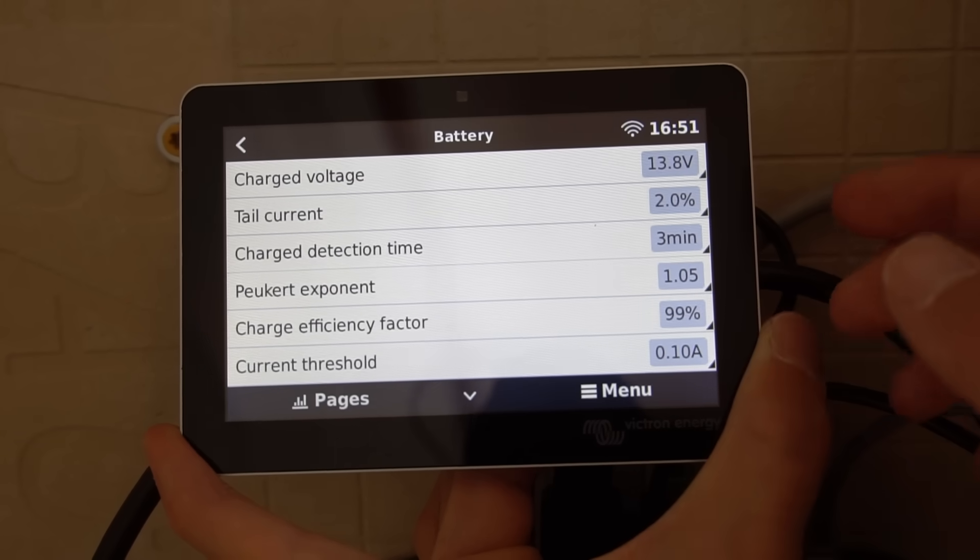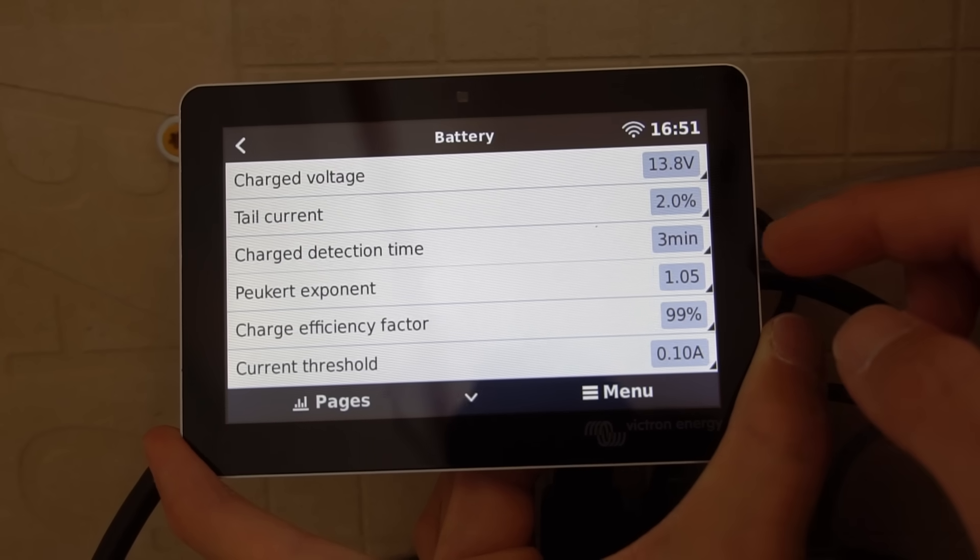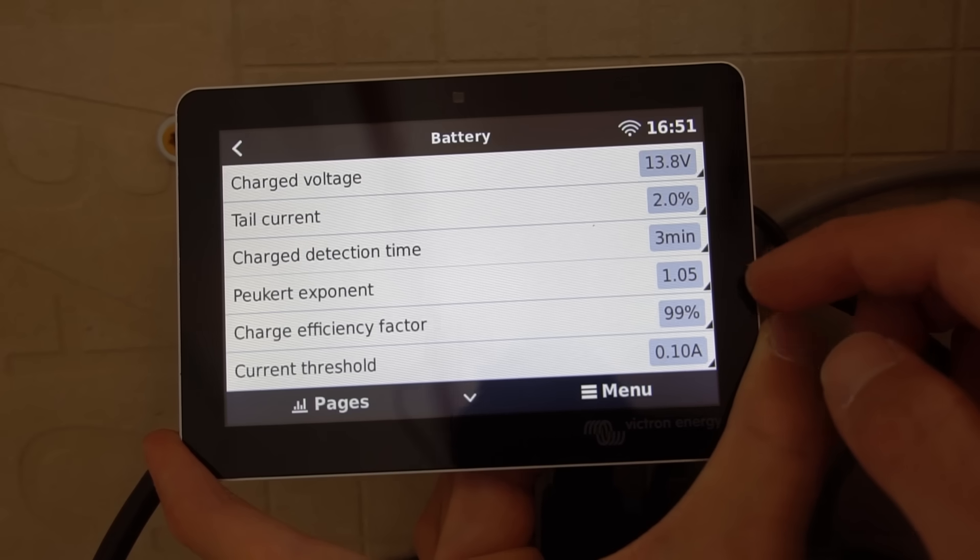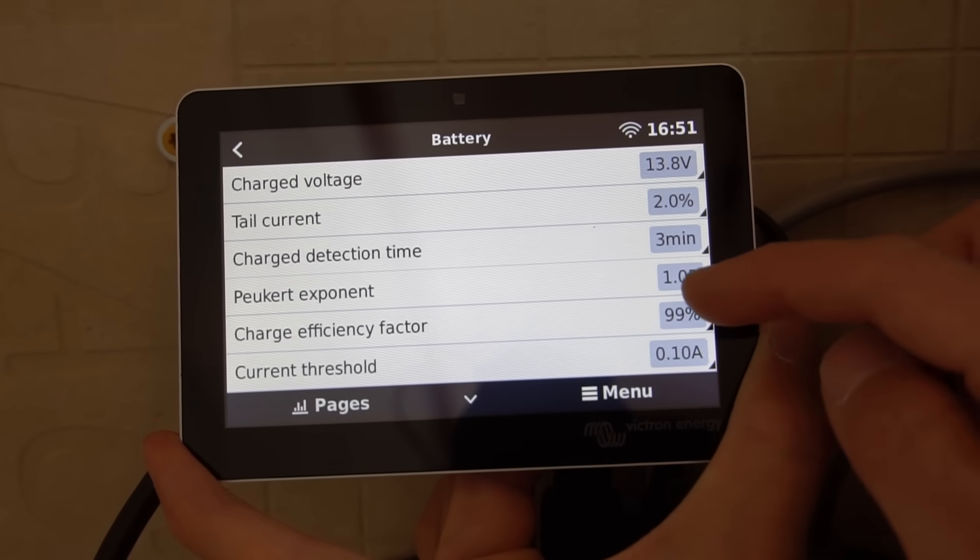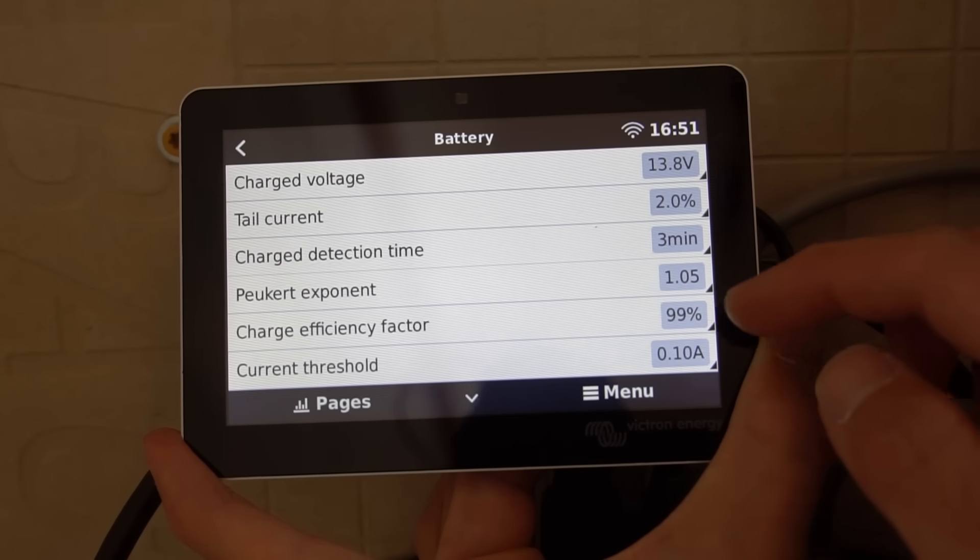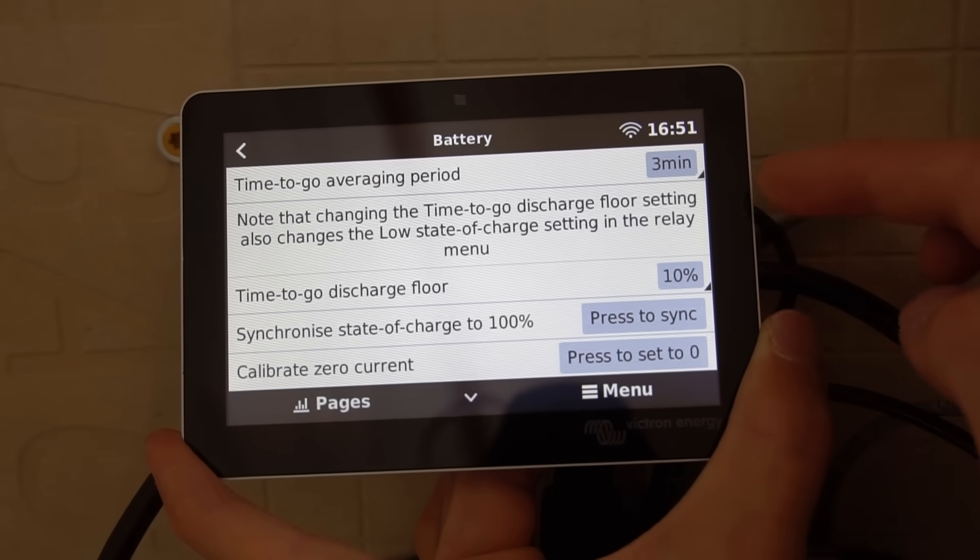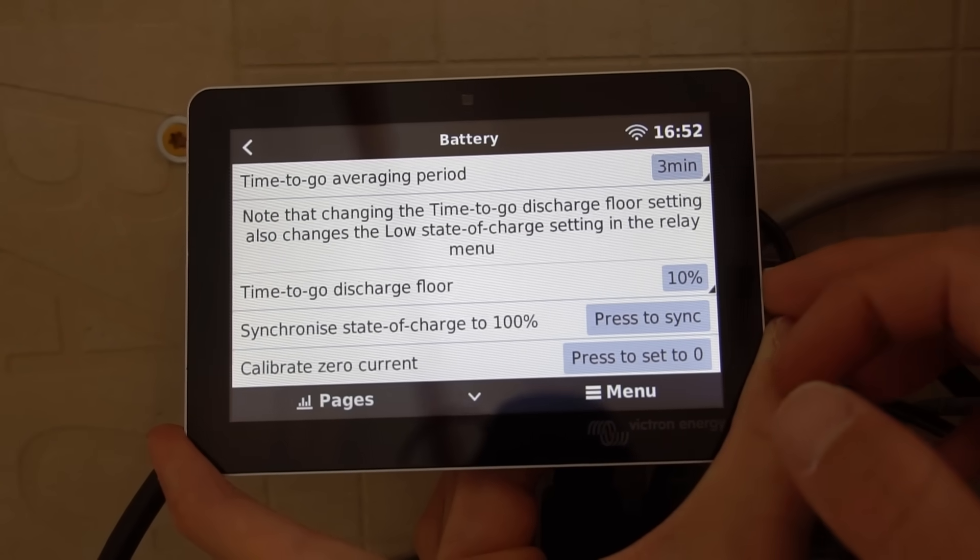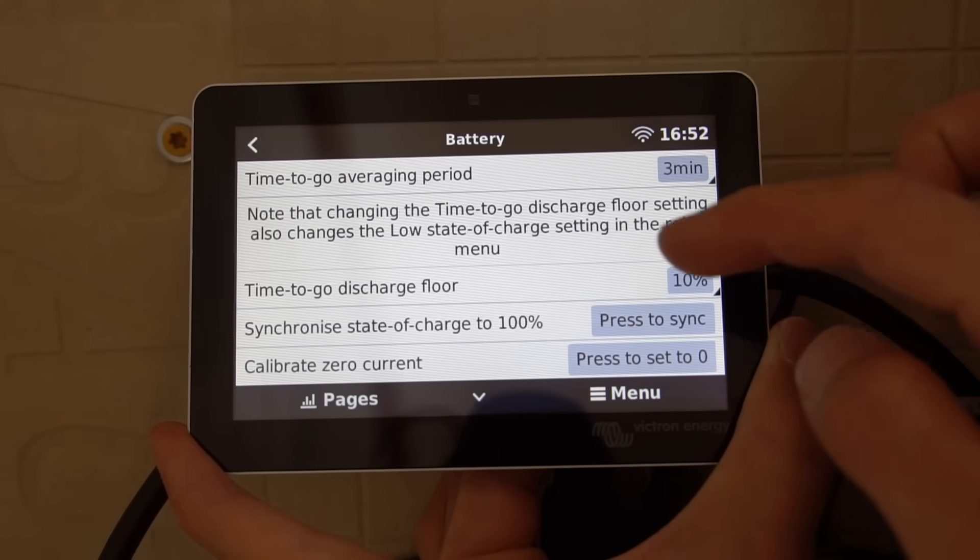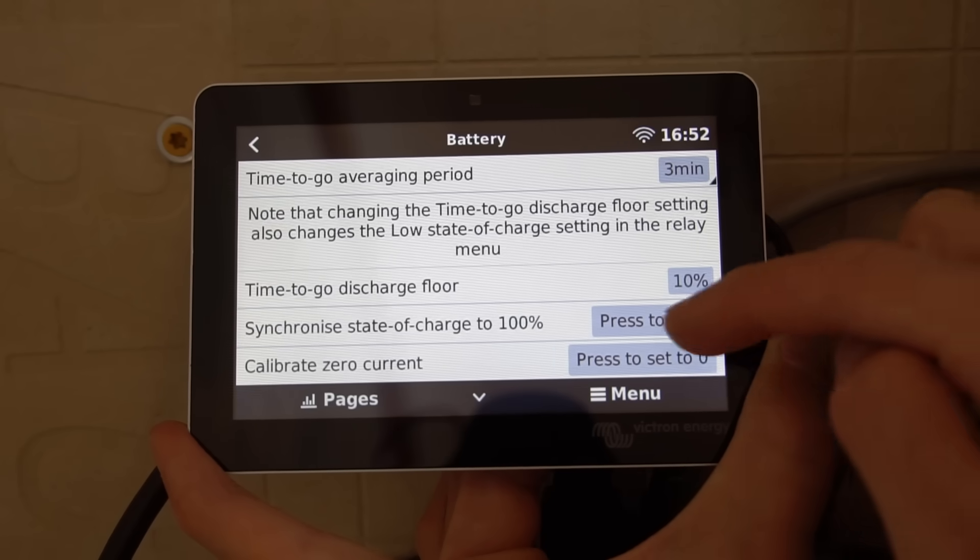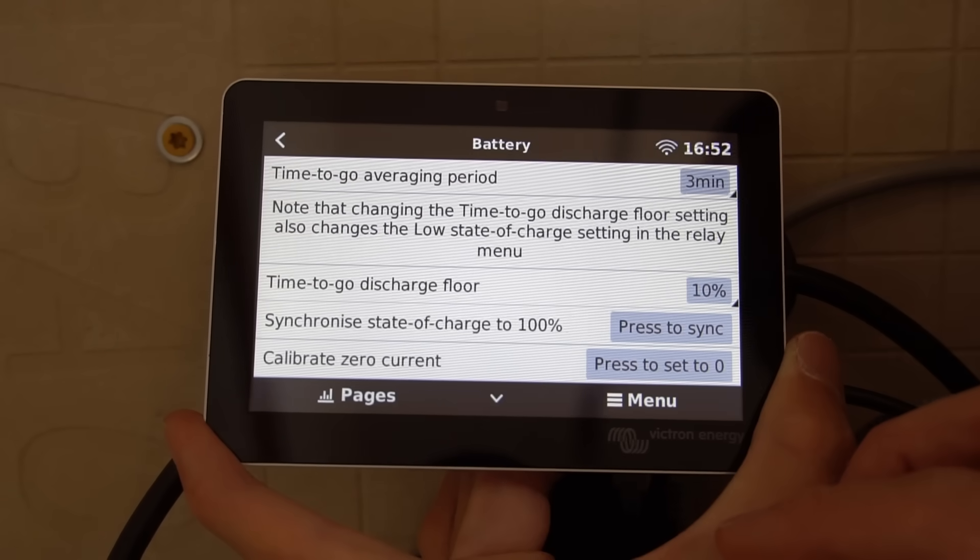And you can change these settings for whatever battery you have. These settings that I have are great for lithium iron phosphate. So charge voltage 13.8. Tail current 2%. Charge detection time 3 minutes. Peukert exponent for lead acid, it's going to be higher. But for us, for lithium iron phosphate, it's 1.05. Charge efficiency factor is 99%. Current threshold 0.1 amps. Time to go averaging period 3 minutes. Time to go discharge floor 10%. And then synchronize state of charge to 100%. On the first cycle, after you charge it to 100%, press to sync right here, and then it will set it to 100%. And then you can ignore the last setting unless your current readings are false.